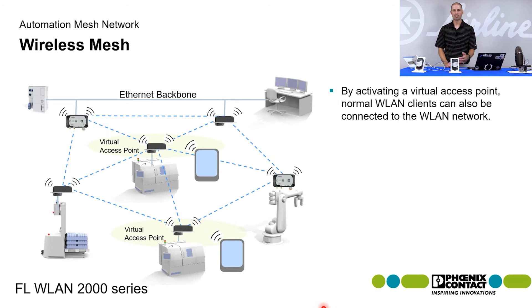These access points don't have to be on every node. Once you gain access on that virtual access point, you can access any device in that mesh network. So your mesh network is now a private, secure network passing your application data back and forth. And when it's needed, you can enable that virtual access point to allow mobile access to that mesh network.